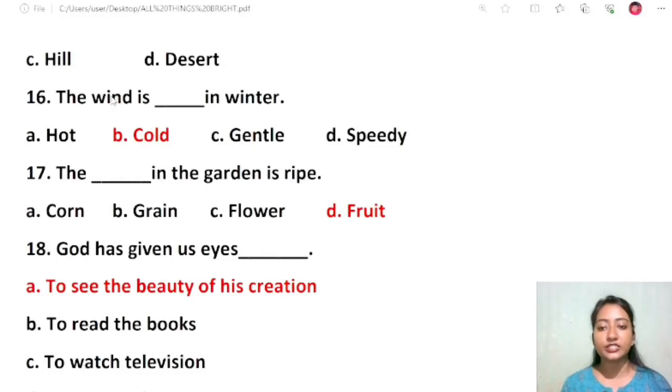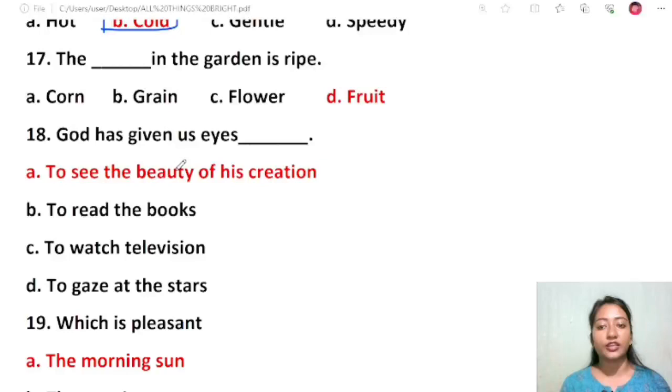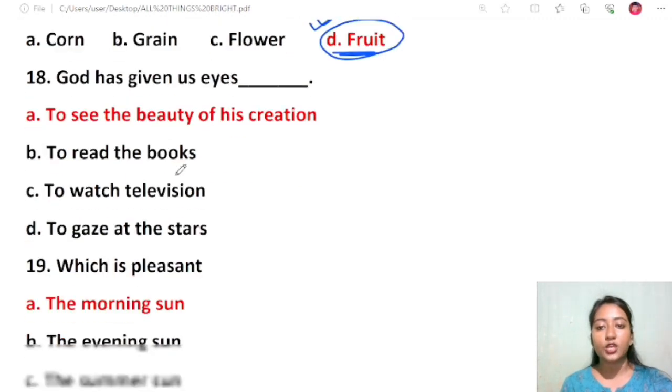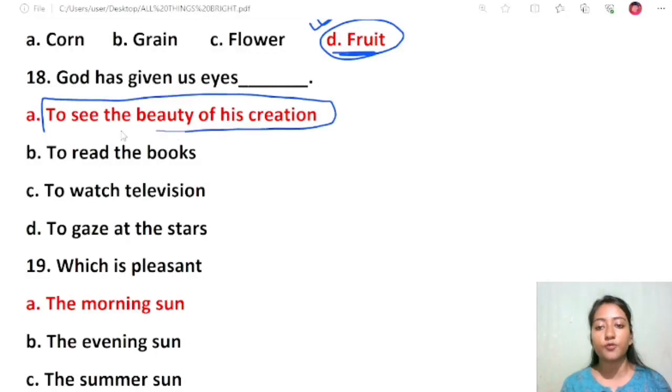Question 15: The wind is cold in winter season. Options are hot, cold, gentle, speedy. The correct answer is cold. Question 16: The ripe fruit in the garden is rife. Options are corn, grain, flower, or fruit. The correct answer is fruit. Question 17: God has given us eyes to see the beauty of his creation. Options were to see the beauty of his creation, to read the books, to watch television, to gaze at the stars.